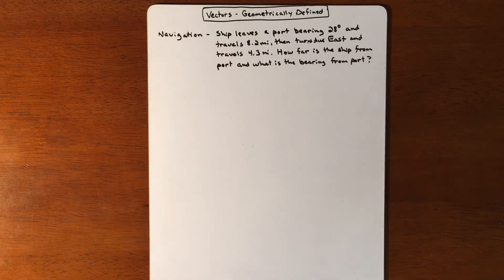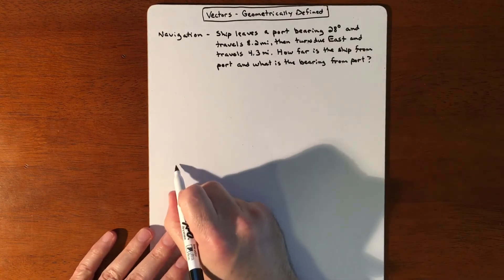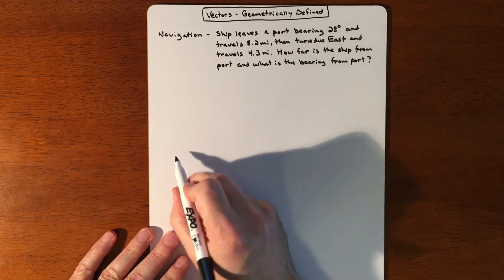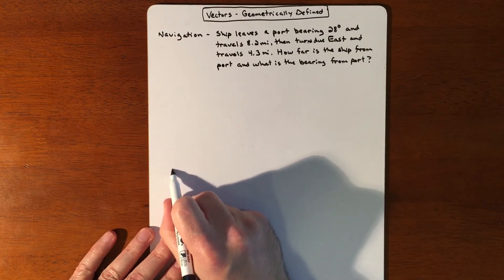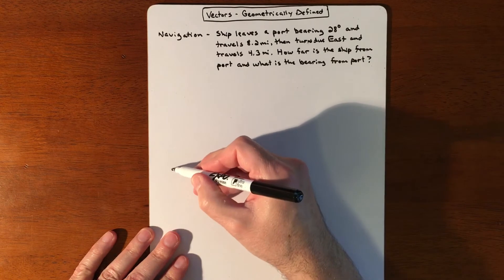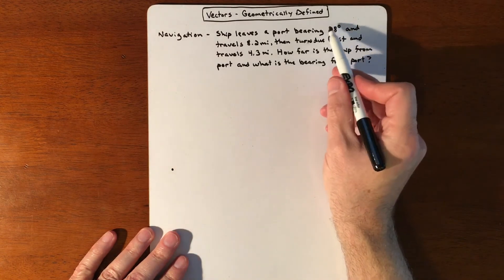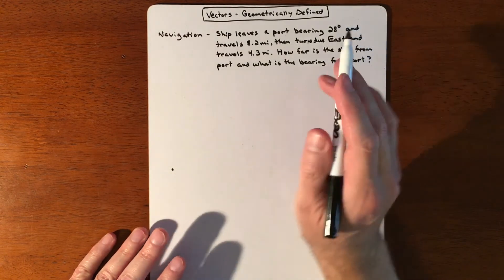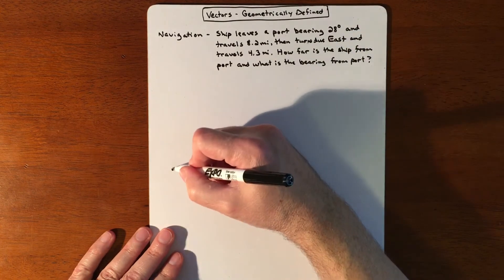So pictures everything. We have a ship that is going 28 degrees. When you draw this, remember that a bearing, if they don't describe an east-west, if there's no measurement on it, then it's from the due north.